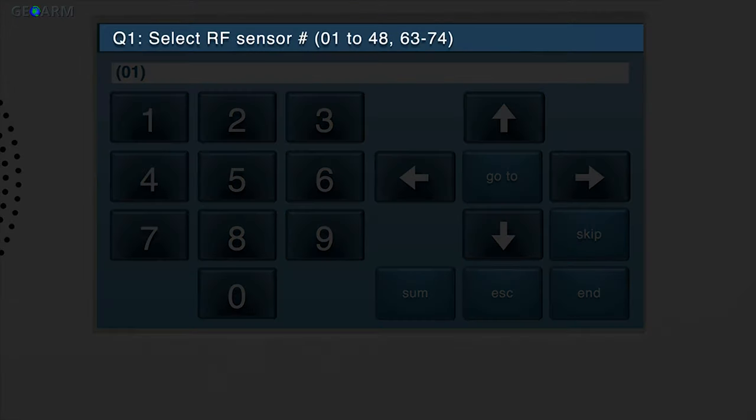You'll see Q1 Select RF Sensor Number displayed in the upper ribbon of the screen. System Configuration is navigated via Questions and Sub-Questions. Wireless zones are programmed in Q1, so we are already on the correct question for wireless devices.